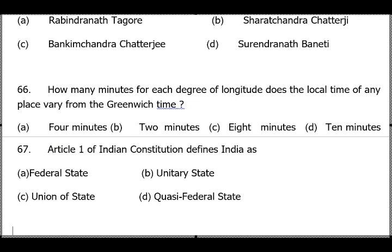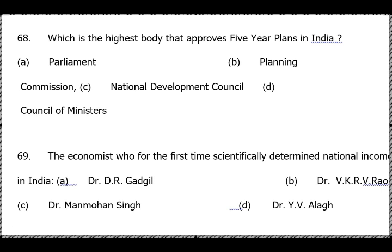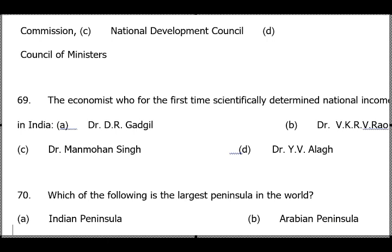Question 67: Article 1 talks about India as a Union of States — answer is option C. Question 68: The highest body that approves Five-Year Plans — the Planning Commission is now replaced by NITI Aayog and Five-Year Plans are no longer made, but the body that used to approve them was the National Development Council, option C.